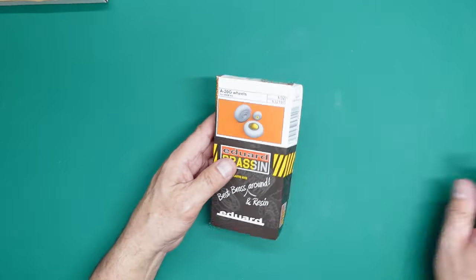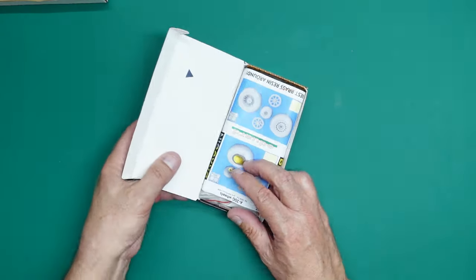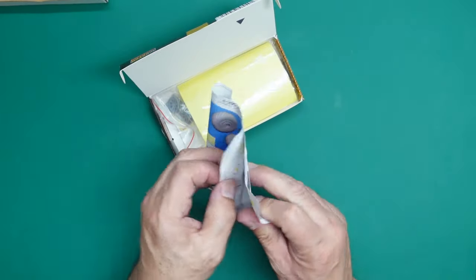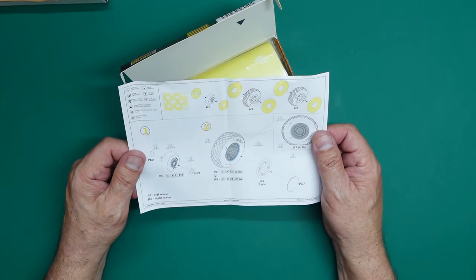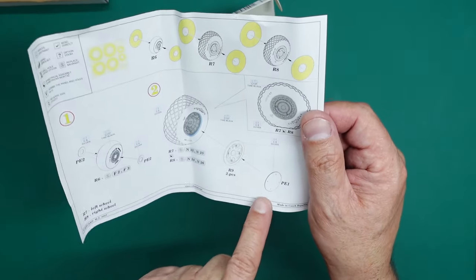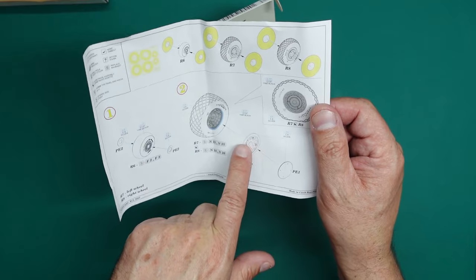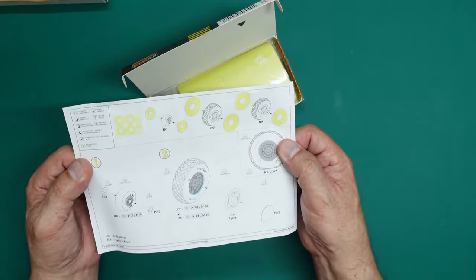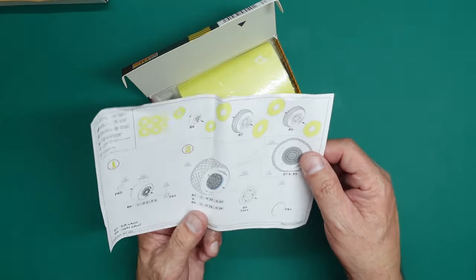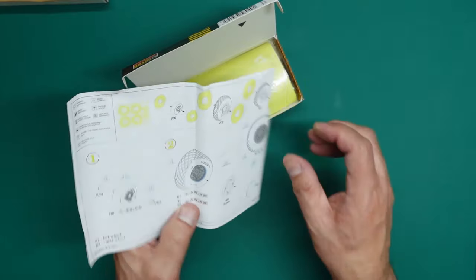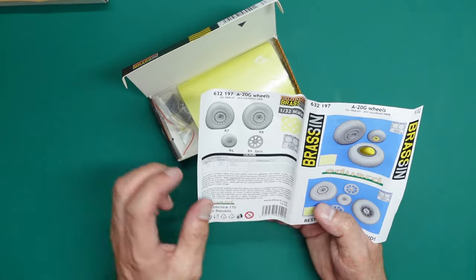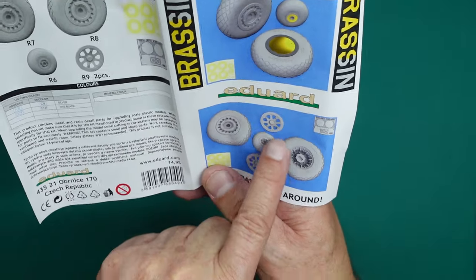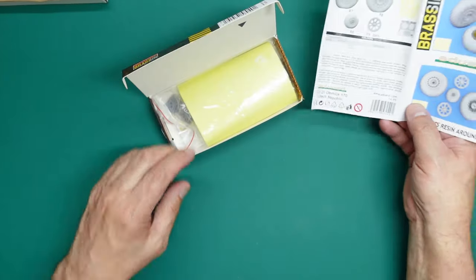For the second part of the review, we're going to look at these wheels. These are resin wheels from Edward. We've got a set of instructions, very simple on how to put them together. Unfortunately the A20 has these horrible discs on - you've got beautiful spoked wheels and then these horrible discs that cover them up. I really don't like them.